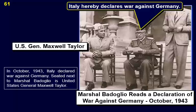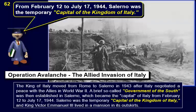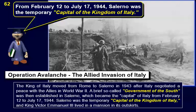Seated next to Marshal Badoglio is United States General Maxwell Taylor. The King of Italy moved from Rome to Salerno in 1943 after Italy negotiated a peace with the Allies. A so-called government of the south was then established in Salerno, which became the capital of Italy from February 12 to July 17, 1944. Salerno hosted the government of Marshal Pietro Badoglio in those months, and King Victor Emmanuel III lived in a mansion in its outskirts.